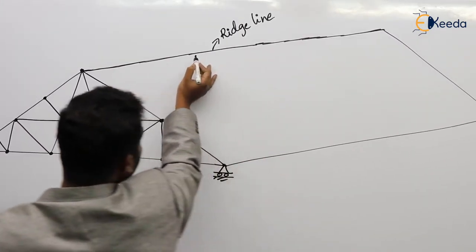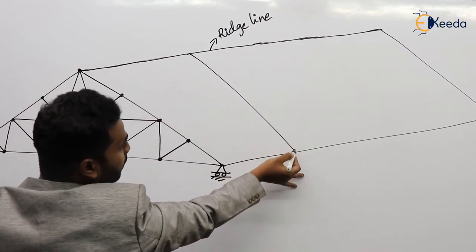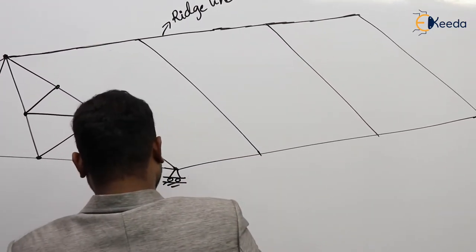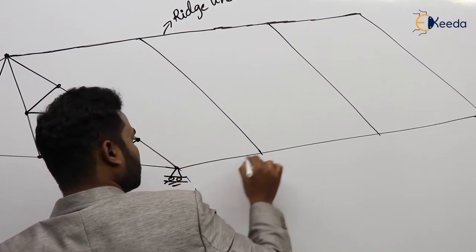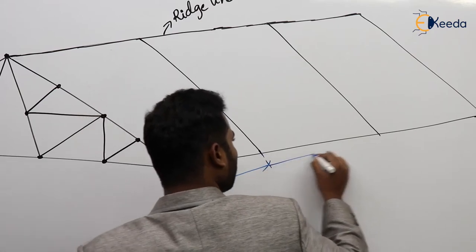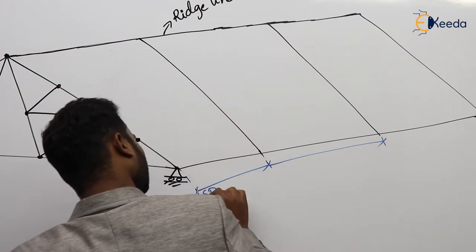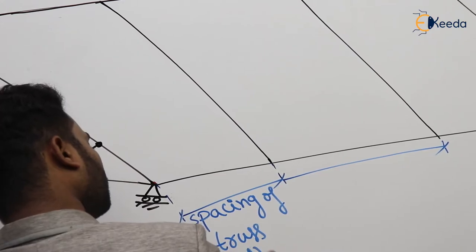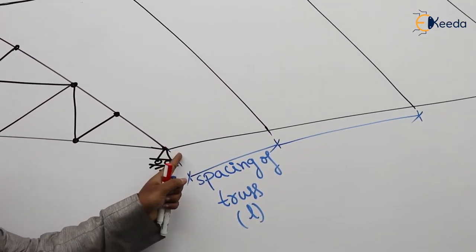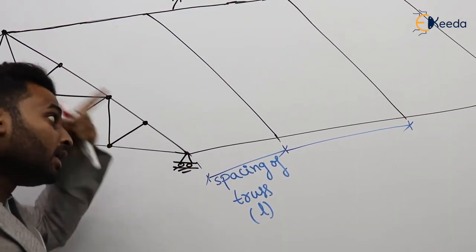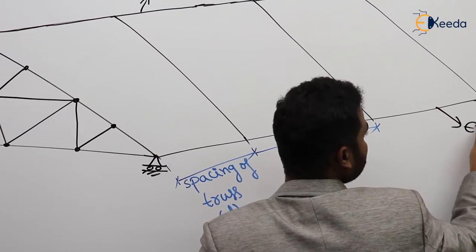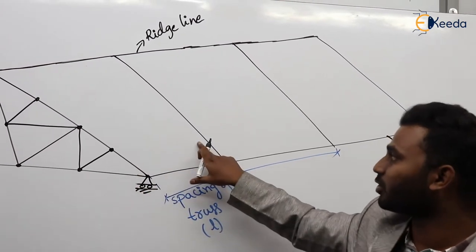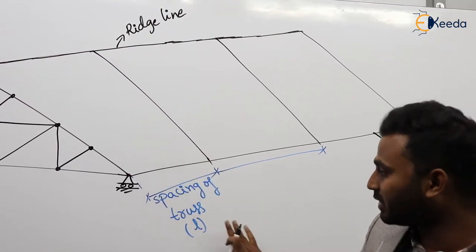We are going to place multiple trusses, and this is the spacing of the truss, represented by a smaller letter. The bottom line joining the bottommost points of the truss is known as the Eave. The topmost line is the Ridge Line and the bottommost line is the Eave. The spacing between trusses is denoted by L.